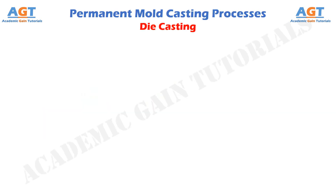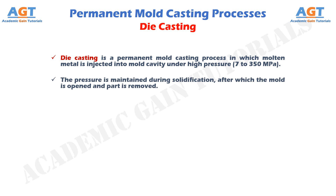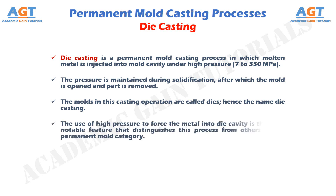Die casting is a permanent mold casting process in which molten metal is injected into a mold cavity under high pressure at about 7 to 350 mega pascals. The pressure is maintained during solidification, after which the mold is opened and the part is removed. The molds in this casting operation are called dies, hence the name die casting. The use of high pressure to force the metal into the die cavity is the most notable feature that distinguishes this process from others in the permanent mold category.